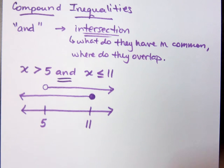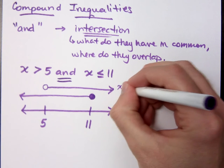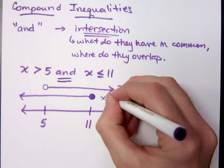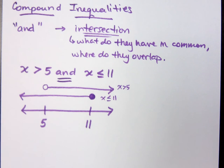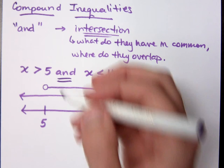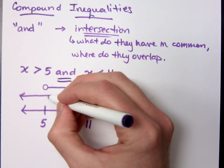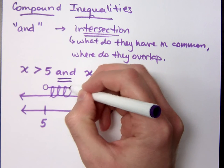Now my question to you is, if this is my x is greater than 5 and this is x is less than or equal to 11, where do these guys overlap? What solutions would they have in common? Anything between 5 and 11. See right here is where these guys overlap, right here.